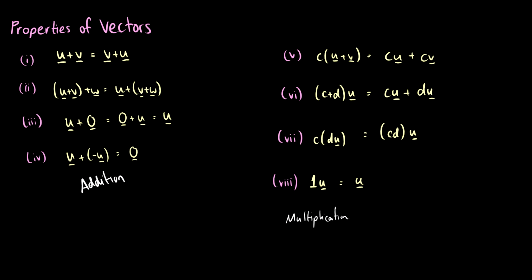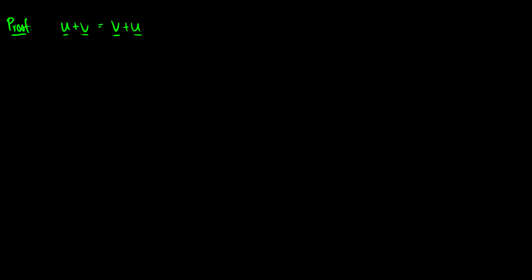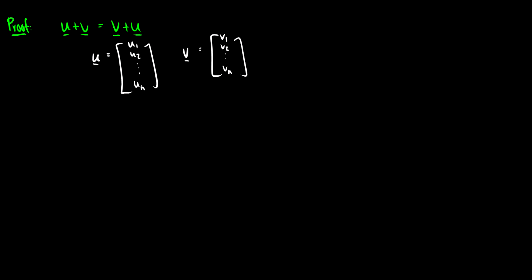So we're going to prove some of these — this is more of a proof video. We're going to prove that two vectors are the same regardless of which order you add them. We say that vector u is a list of entries u1, u2, all the way down to un, and vector v is the same kind of list. When we add these two together, we take u plus v — that's the list u1 down to un, and we add v1 down to vn.